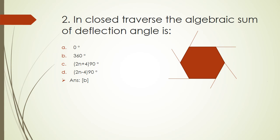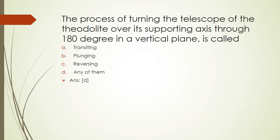Question 3: The process of turning the telescope of the theodolite over its supporting axis through 180 degrees in a vertical plane is called: transiting, plunging, reversing, or any of them. The right answer is any of them - transiting, plunging, or reversing.